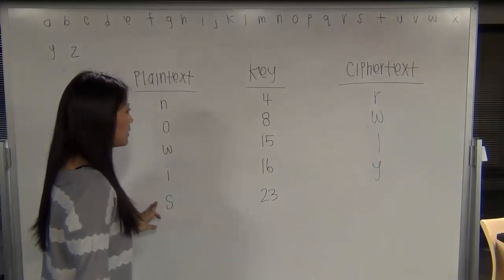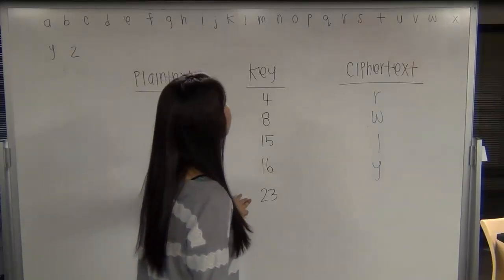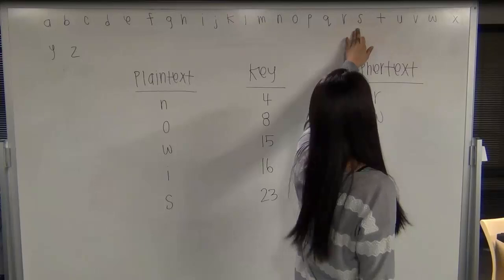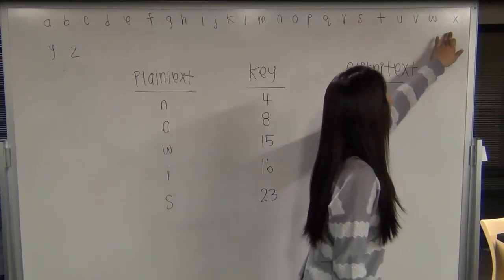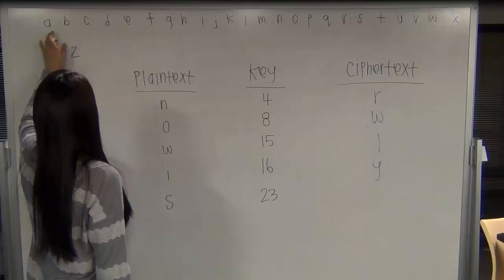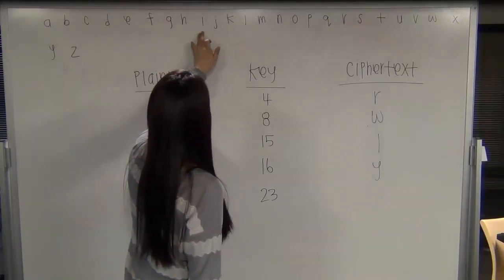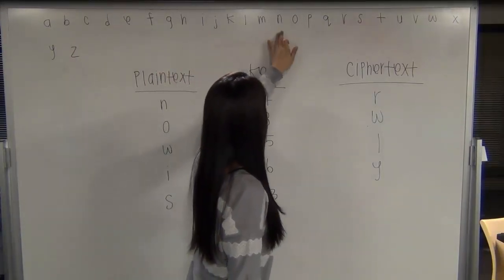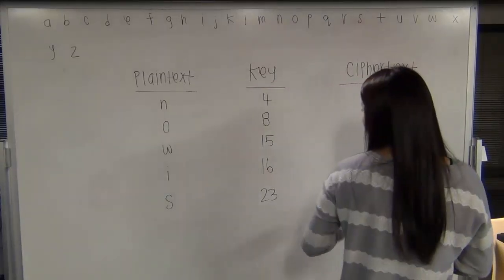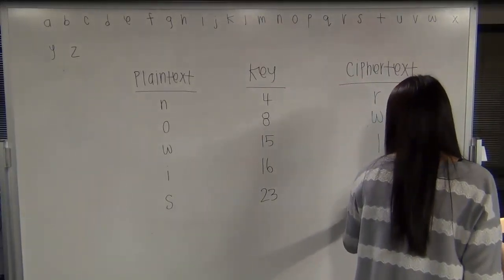So the next plaintext is S, key length 23. So S, move down 23: 1, 2, 3, 4, 5, 6, 7, 8, 9, 10, 11, 12, 13, 14, 15, 16, 17, 18, 19, 20, 21, 22, 23. And you get a ciphertext of P.